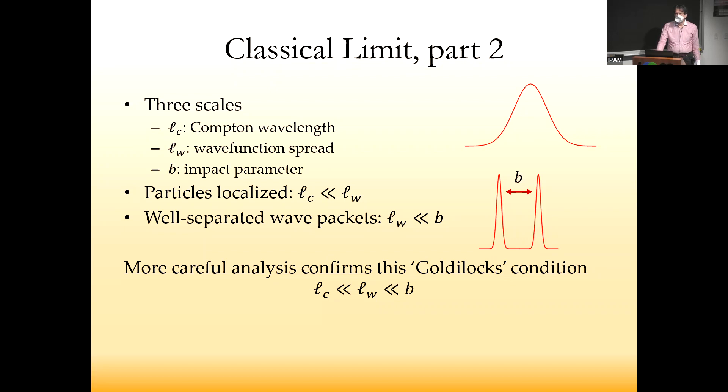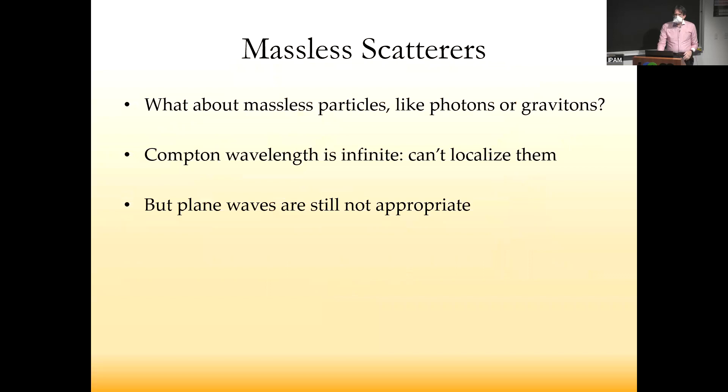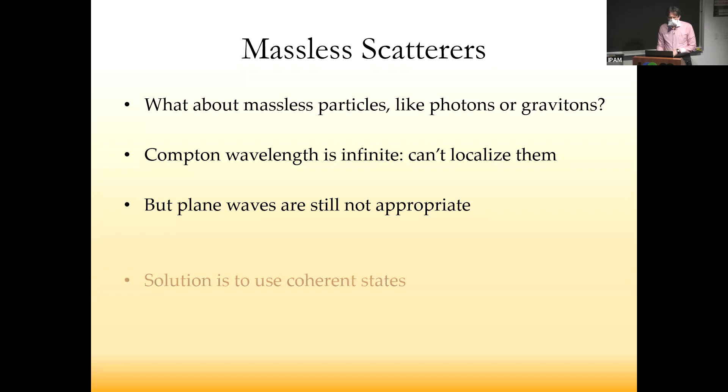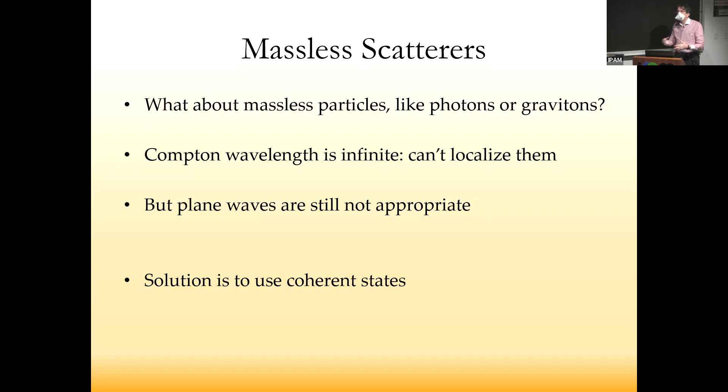The first question, since I'm doing the elements of the title in reverse order, is what happens if we want to do massless scattering. If we want to scatter photons or gravitons, the Compton wavelength is infinite so we can't localize them. We can't just build a wave packet as we did for massive particles. On the other hand, plane waves are still not appropriate—we're not doing collider scattering here.